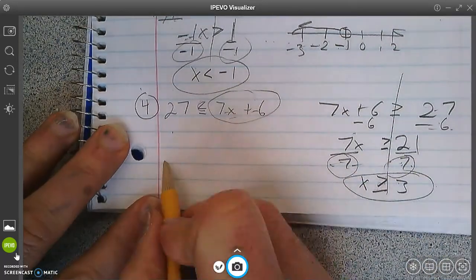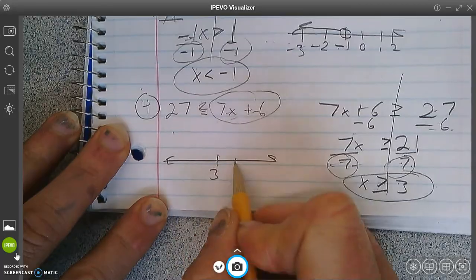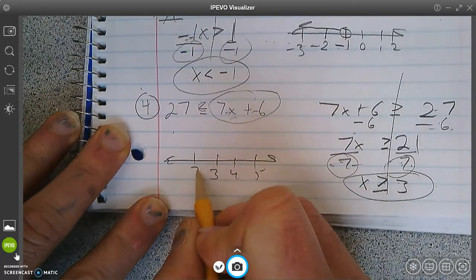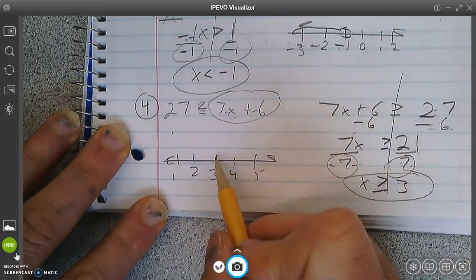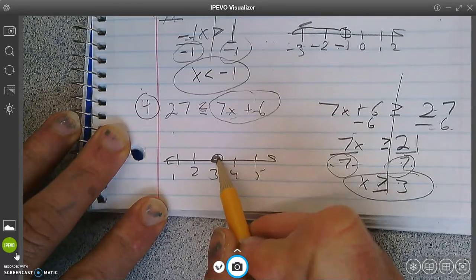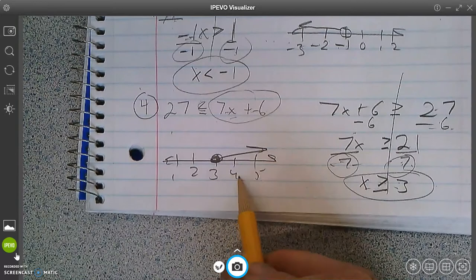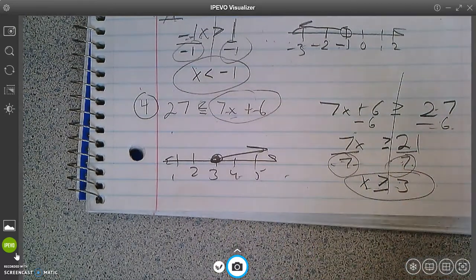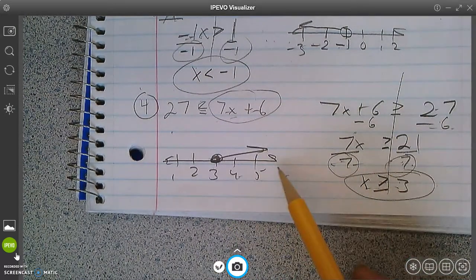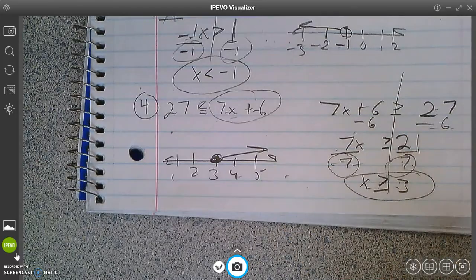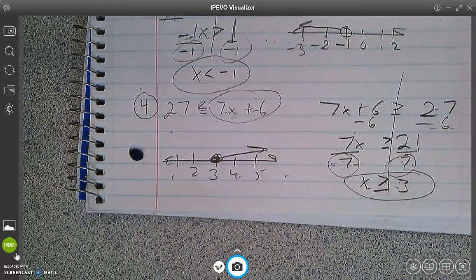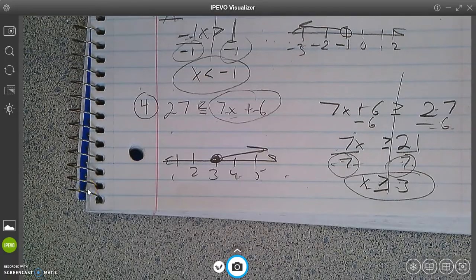There we go. Got it. x is greater than or equal to 3. Got to graph it. 3, 4, 5, 2, 1. Greater than or equal to. So 3 is a solution also because 3 equals 3. So that's why I shaded in. Greater than right there. 4, 5, 6, 7, 20, 25, 30, 100, a million, all those numbers to the right work. There you go. Nice job. Keep working on the worksheet. Keep practicing. You got it. Good work, everybody.